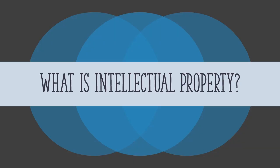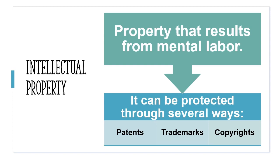We move on from privacy to intellectual property. We will delve deeper into the classifications and distinguish three main forms of intellectual property. Intellectual property is property that results from your mental labor. This mental labor can be protected in three ways: patents, trademarks, and copyrights.